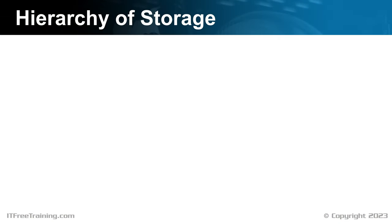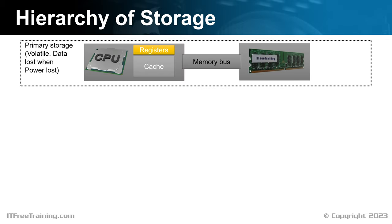Before I start having a look at storage devices, I will first have a look at the hierarchy of storage. Understanding this will give you an idea of what you are trying to achieve with each of the different storage types. To start with, I will look at primary storage. Primary storage is used to run software and store data that the computer needs to access quickly. There is a small amount found in the CPU in the form of registers and cache. Registers are small amounts of data used by the CPU for calculations. Cache is the fast second copy of some of the computer's memory used to improve performance. This memory may be fast; however, when the power is switched off, the data is lost. Thus, this storage is often referred to as volatile.